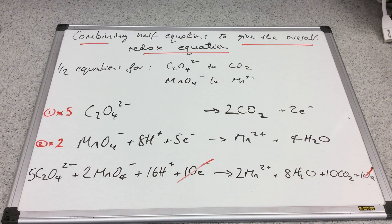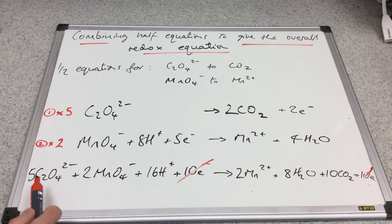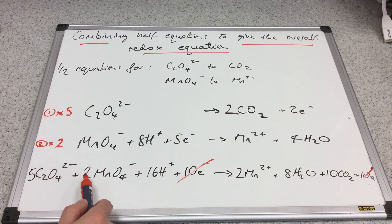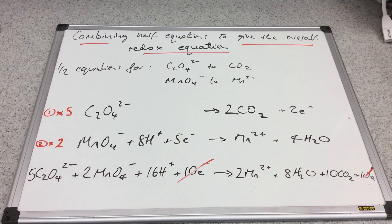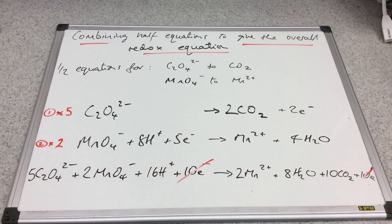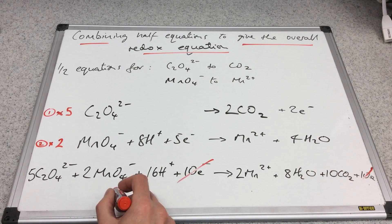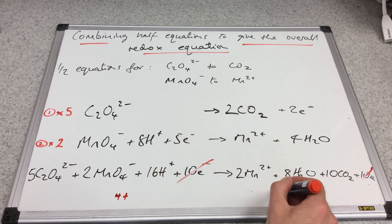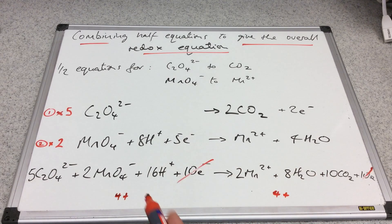We must also make sure the charges balance. We've got five times two minus is 10 minus, plus another two minus, that's 12 minus, plus 16 plus leaves four plus. We've got a total of four plus charge on the left. Two two pluses is obviously four plus, and the charges equal each other.